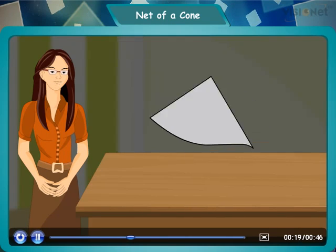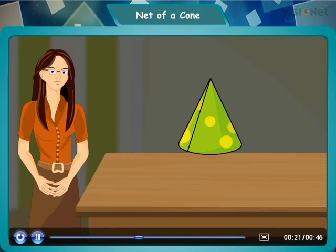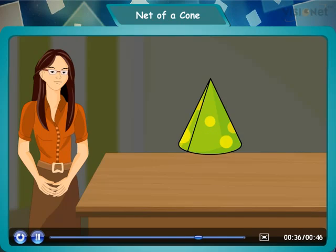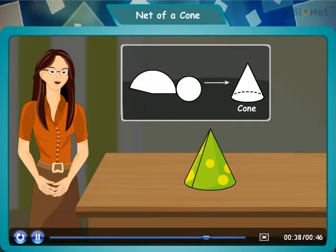Now, if you fold the sector in such a way that the two straight edges meet, you will get the shape of a cone. But if you want a closed cone at the bottom, you will need a circle, and its perimeter will be the same as the arc length of the sector, as shown. And this is nothing but the net of a cone.